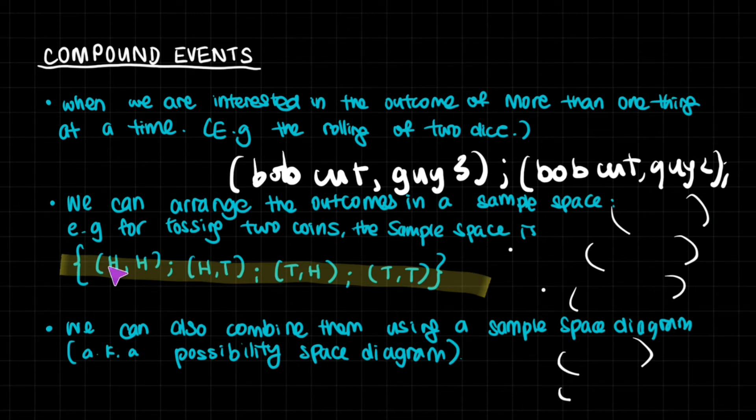Well, all the outcomes possible would be head for one, head for another, or head for one, tail for another, tail for one, head for another, or both tails. So these are the possible outcomes. You arrange them in this fashion, and then you have to close it in with these brackets.